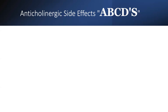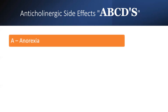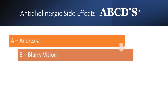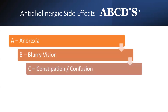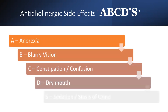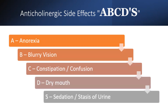Anticholinergic side effects can be remembered with the mnemonic ABCDS: A for anorexia, B for blurry vision, C is constipation or confusion, D is dry mouth, and S is sedation or status of urine (urine retention).